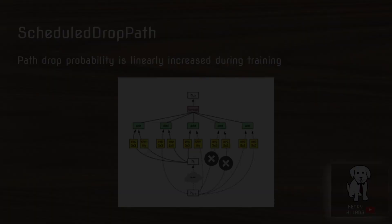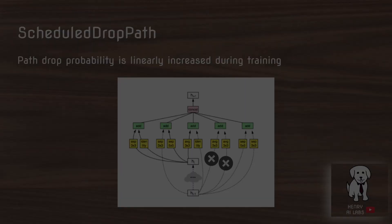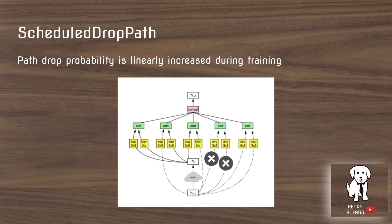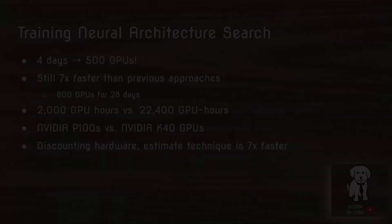Another technique used for optimization is scheduled drop path, which drops some of the paths that send feature maps to different layers with some probability — similar to dropout, which zeros out neurons in a multi-layer perceptron. The key idea of scheduled drop path is that as training progresses, the frequency at which paths are dropped is increased.